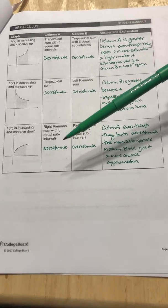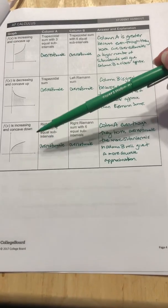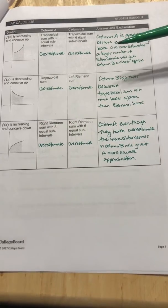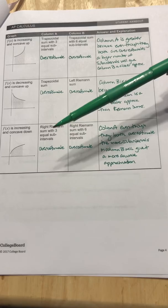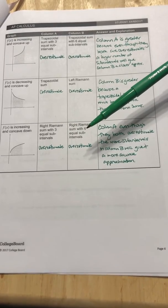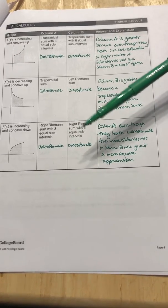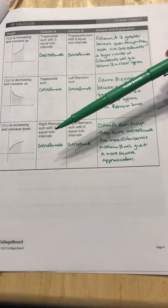Right Riemann sums overestimate for something increasing, but it's kind of like what we did up here. Column A is going to be bigger because the one with more sub intervals is going to give you a more accurate answer and the one with less is going to be overestimating more.